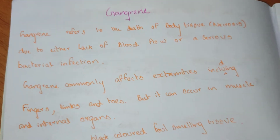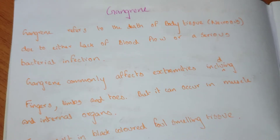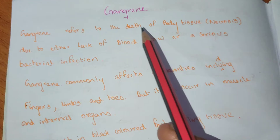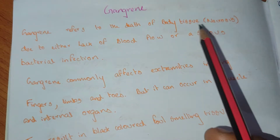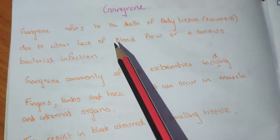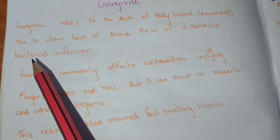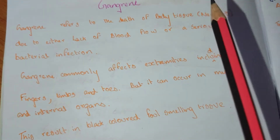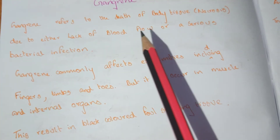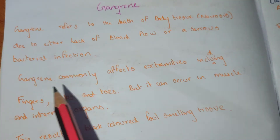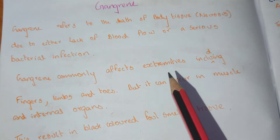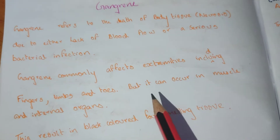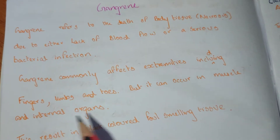Welcome to Medicinal Note YouTube channel. Gangrene refers to death of body tissue, also known as necrosis, due to either lack of blood flow or serious bacterial infection. Gangrene commonly affects extremities including fingers, limbs, and toes, but it can also occur in muscle and internal organs.